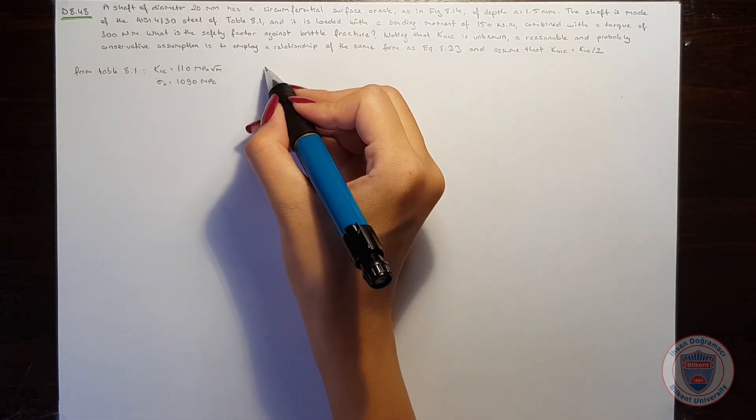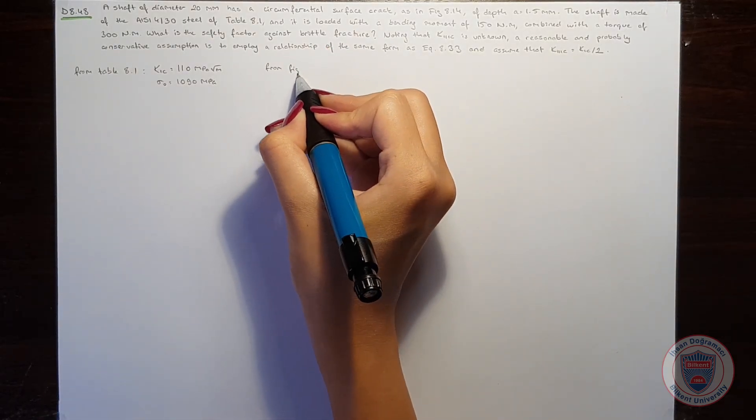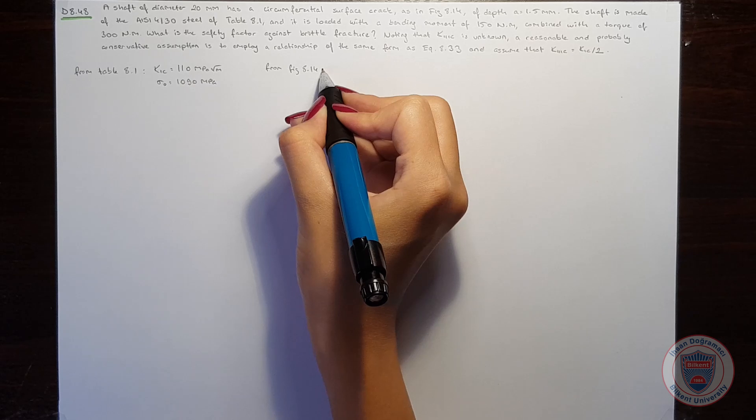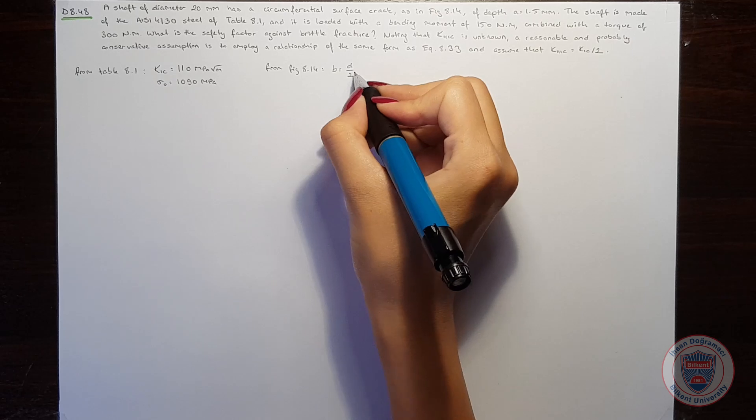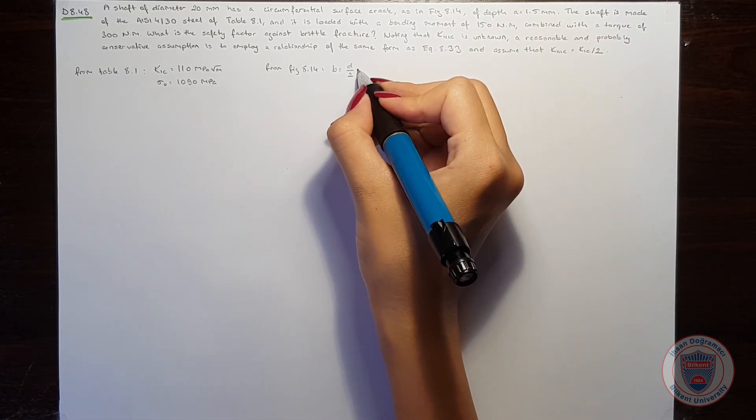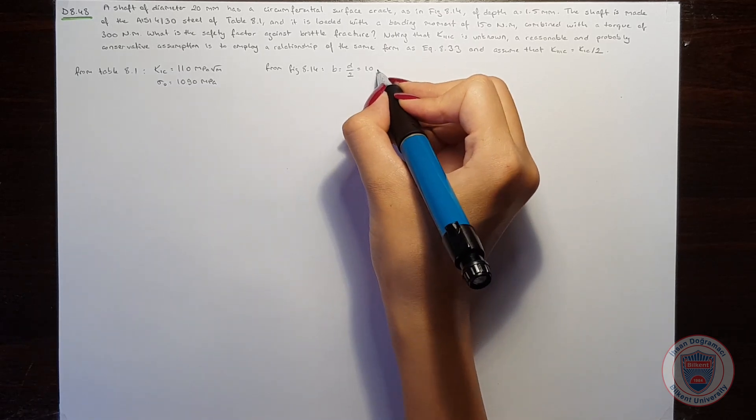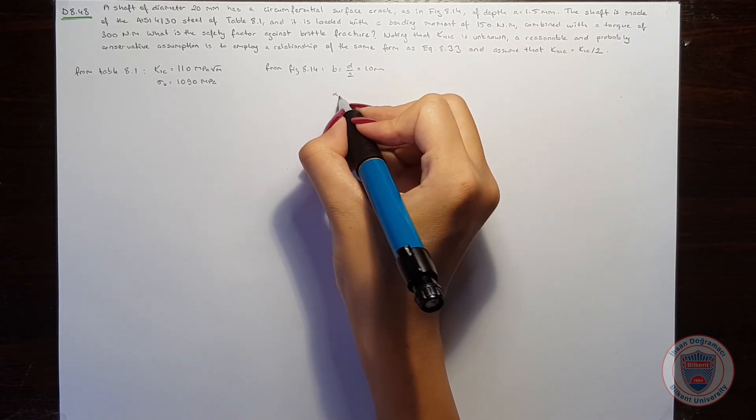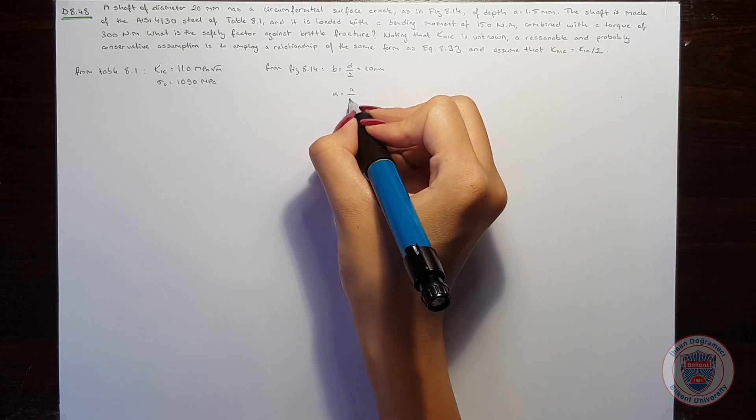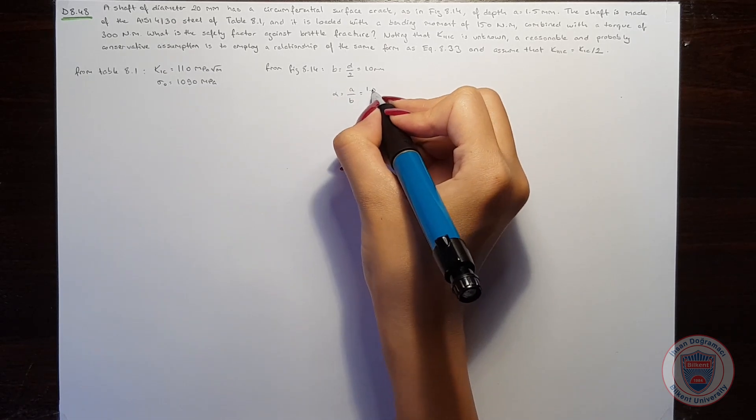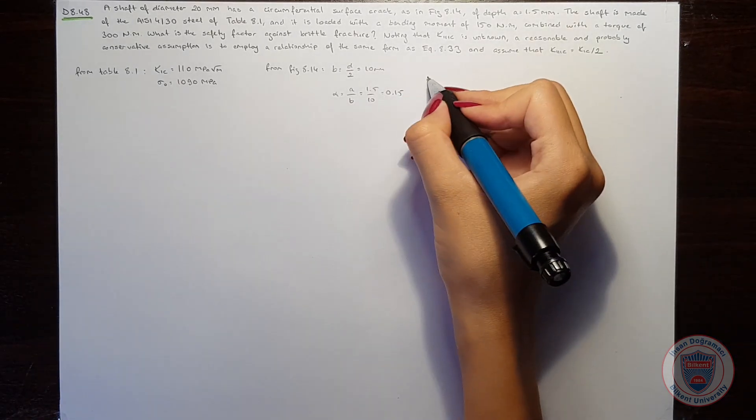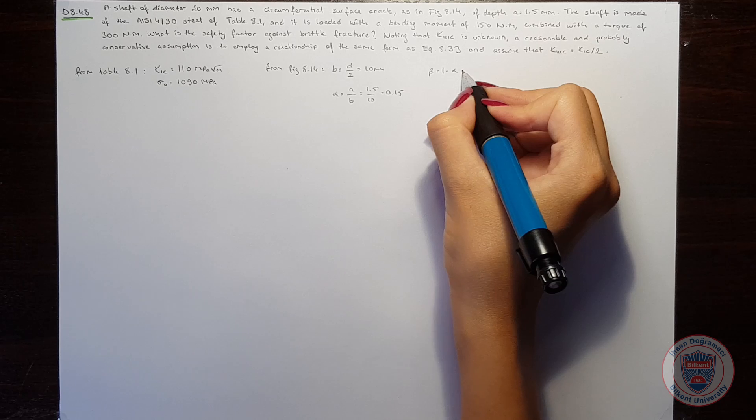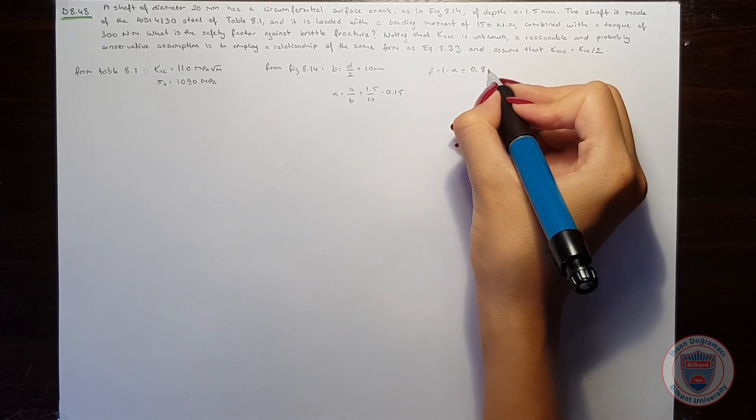From Figure 8.14, we have B equals D over 2, which equals 10 mm. Then alpha equals A over B, which is 1.5 over 10, giving us 0.15. Finally, beta equals 1 minus alpha, which is 0.85.